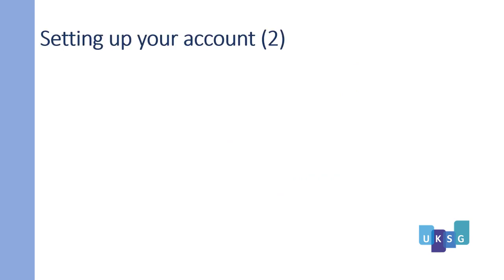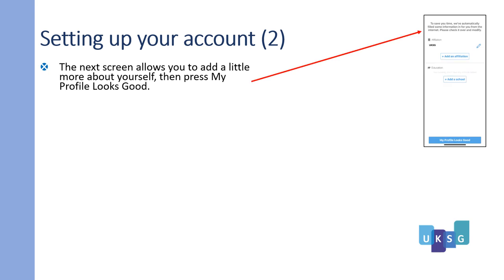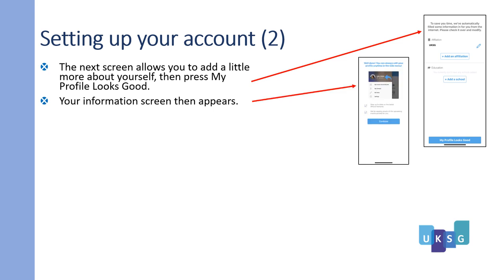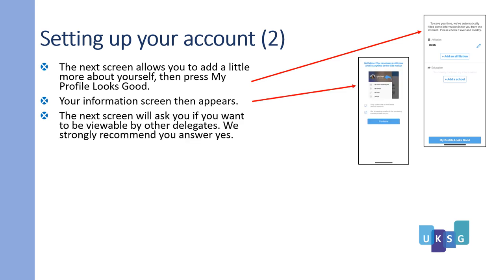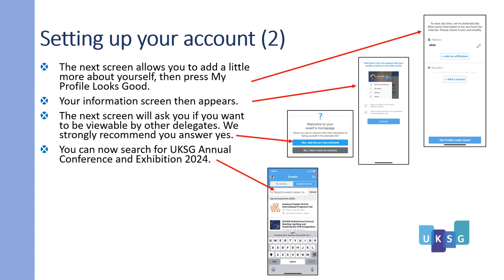Setting up your account, slide two. The next screen allows you to add a little more information about yourself, then press 'my profile looks good.' Your information screen then appears. The next screen will ask you if you want to be viewable by other delegates — we strongly recommend you answer yes. You can now search for UKSG Annual Conference and Exhibition 2024, which will load the UKSG 2024 app.